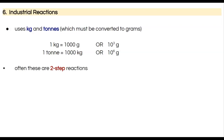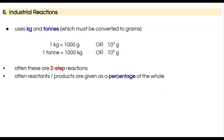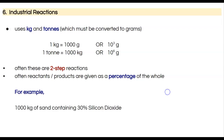Often we're going to see two or more steps in reactions. For example, we might need to take raw materials and produce a primary product, then use that primary product to produce a second, final product. Another thing to remember is that in industrial chemistry we're often using raw materials, and those reactants are given as a percentage of the whole.